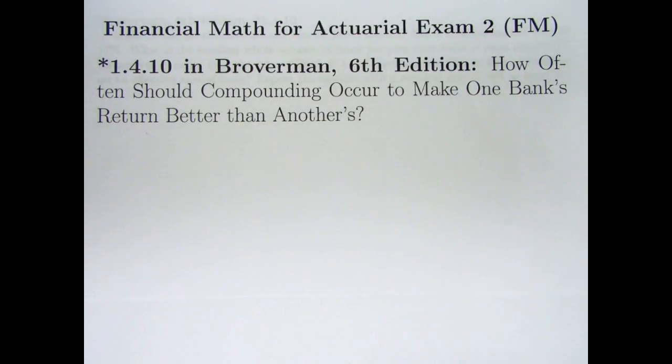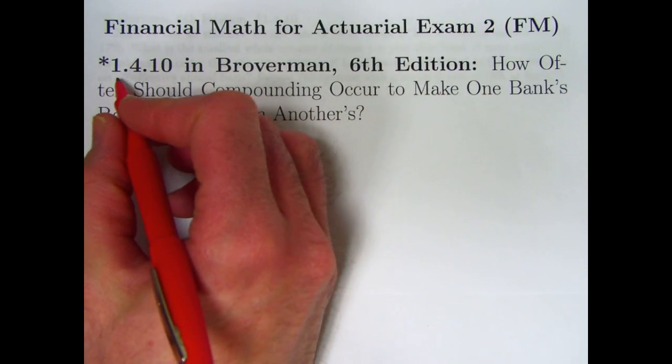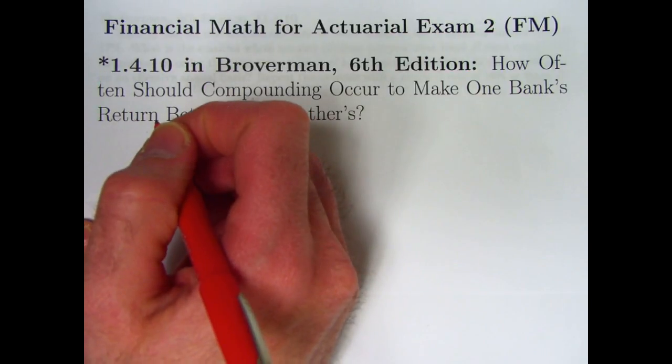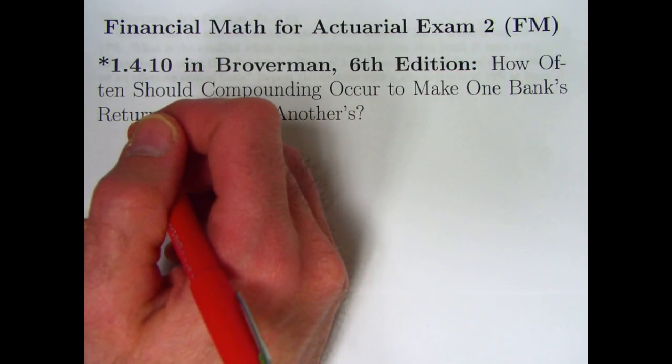Hi. In this, my 11th video on prepping for actuarial exam 2, we're going to look at problem 1.4.10 in Broverman in the 6th edition. It's a starred problem. It's not an old exam question, but it's worth looking at anyway.